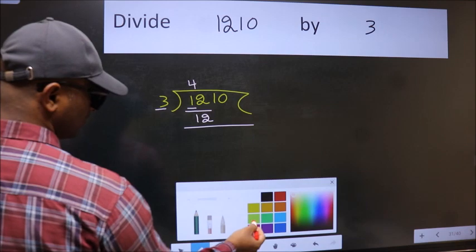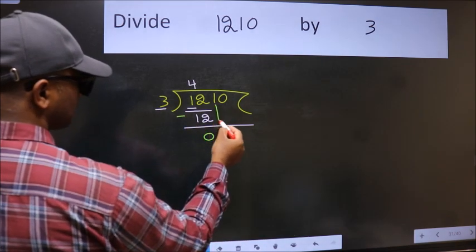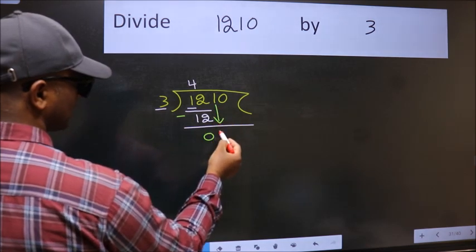Now we should subtract. We get 0. After this, bring down the beside number. So, 1 down.